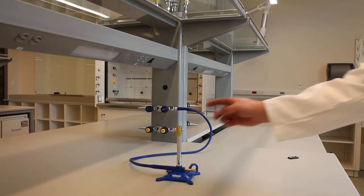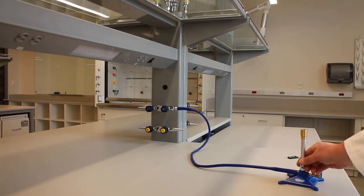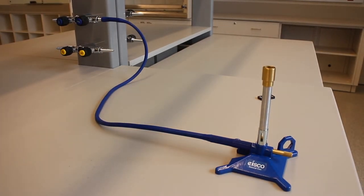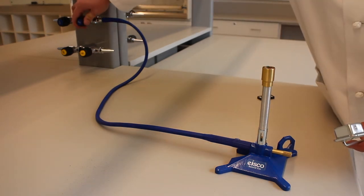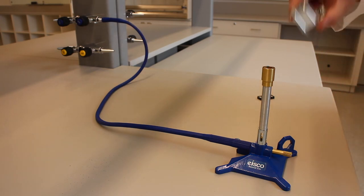Also make sure your Bunsen burner is not directly underneath any shelving or supplies. With the burner positioned away from overhanging items and fellow lab mates, turn the gas all the way on at the main control knob. Then, use the striker to ignite the Bunsen burner.